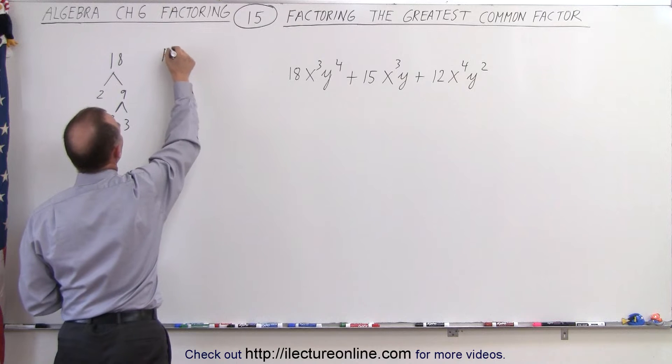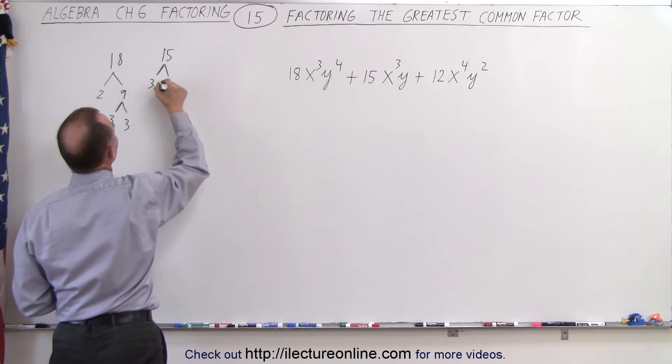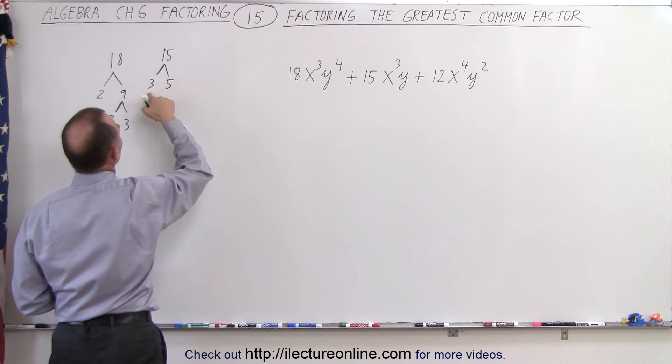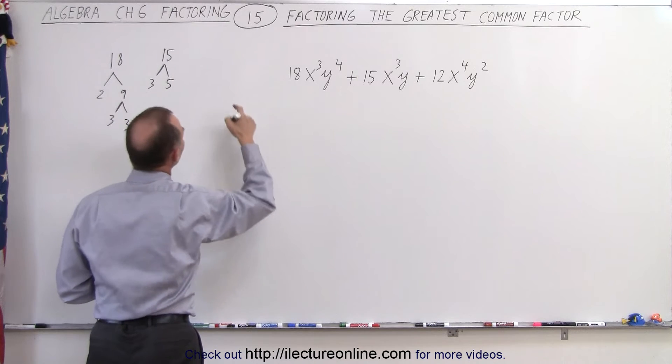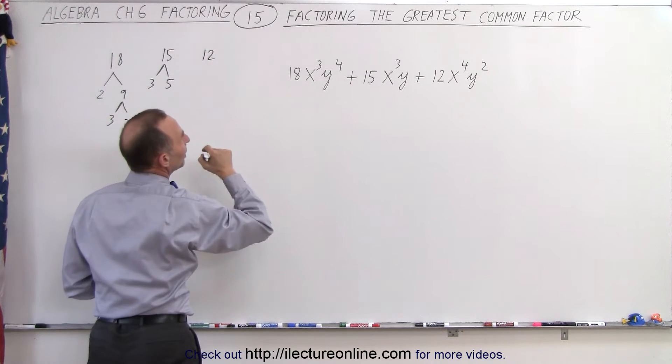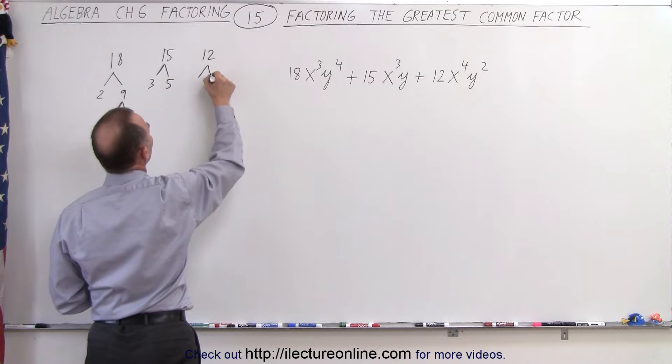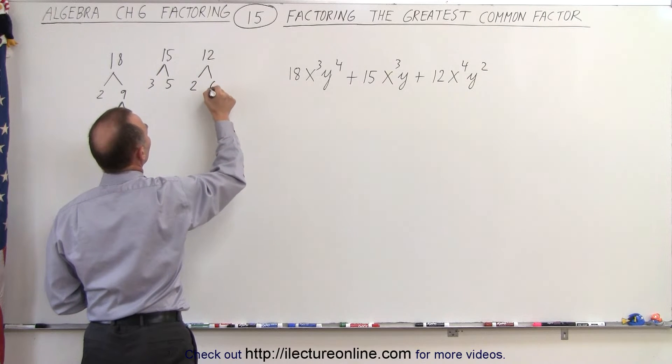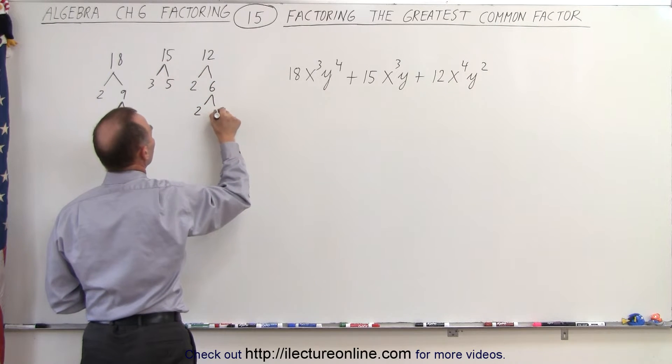The number 15 is divisible by 3, and that leaves us with a 5. So 15 is 3 times 5. And the number 12 can be written, first we divide it by 2 to give us 6, and then 6 can be divided by 2 to give us 3.